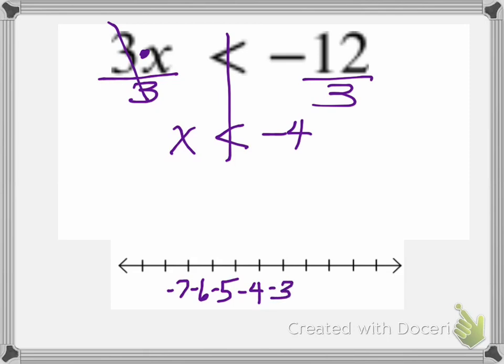And to the right: negative 3, negative 2, negative 1, 0. So if I want to graph x is less than negative 4, it's not equal to, so I have to have an open circle. And less than is to the left, so I shade to the left. That tells me any number to the left of negative 4 would satisfy this equation — negative 5 would, negative 6, negative 7, and so forth.